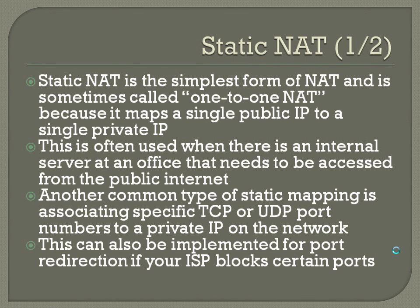There are three types of NAT configurations: Static NAT, Dynamic NAT, and NAT Overload. Static NAT is the simplest form — sometimes called 1-to-1 NAT because it maps a single public IP to a single private IP. This is often used when there is an internal server that needs to be accessed from the public internet. Another common type of static mapping is associating specific TCP or UDP port numbers to a private IP. For example, if you have a web server on a private address, you can set up Static NAT to forward requests to ports 80 and 443 to that web server.